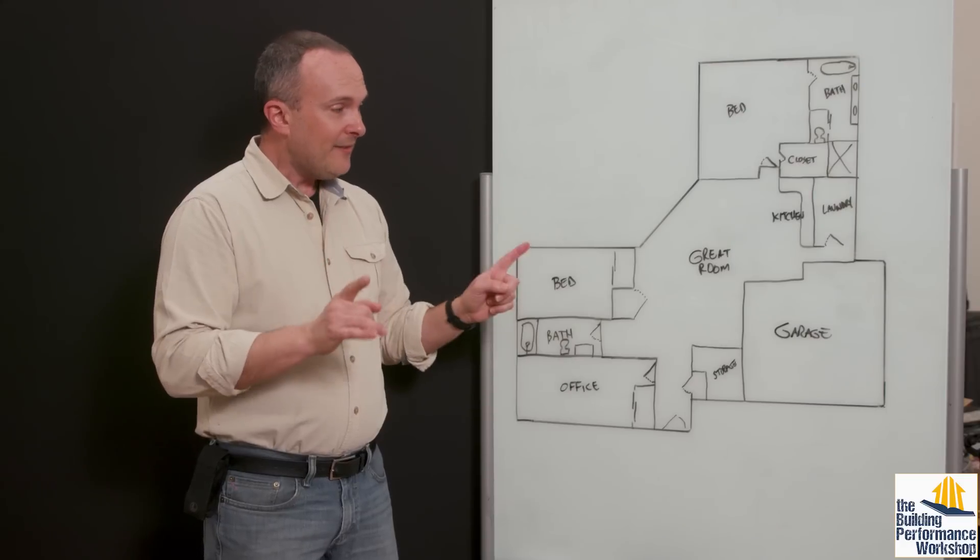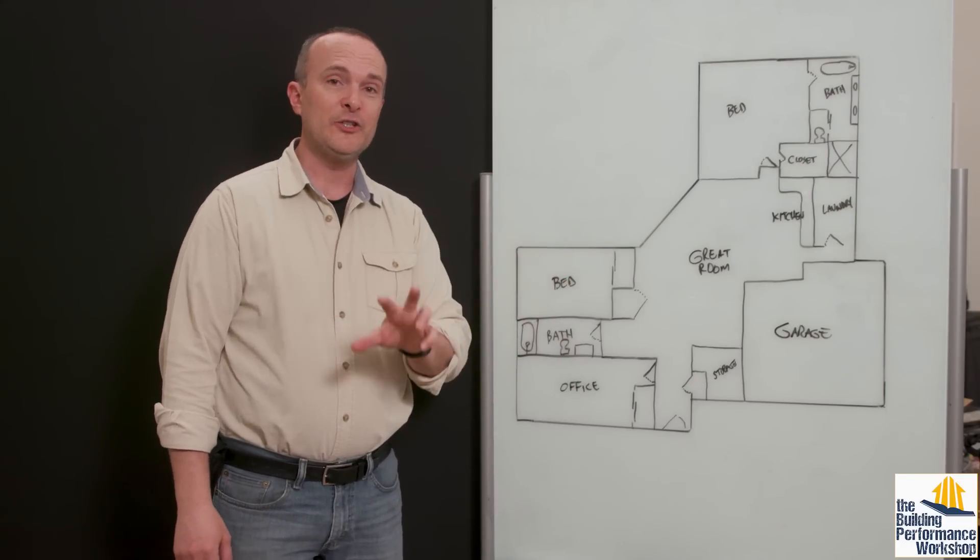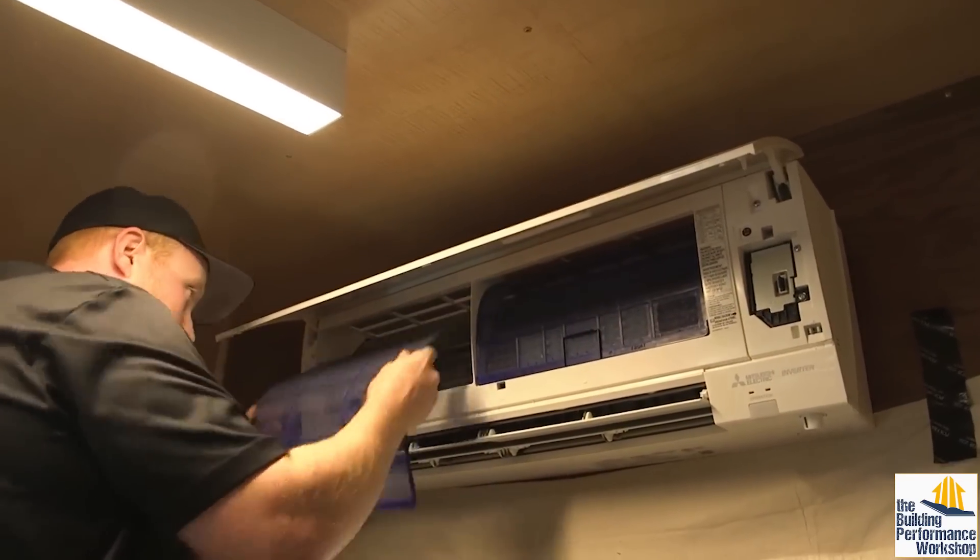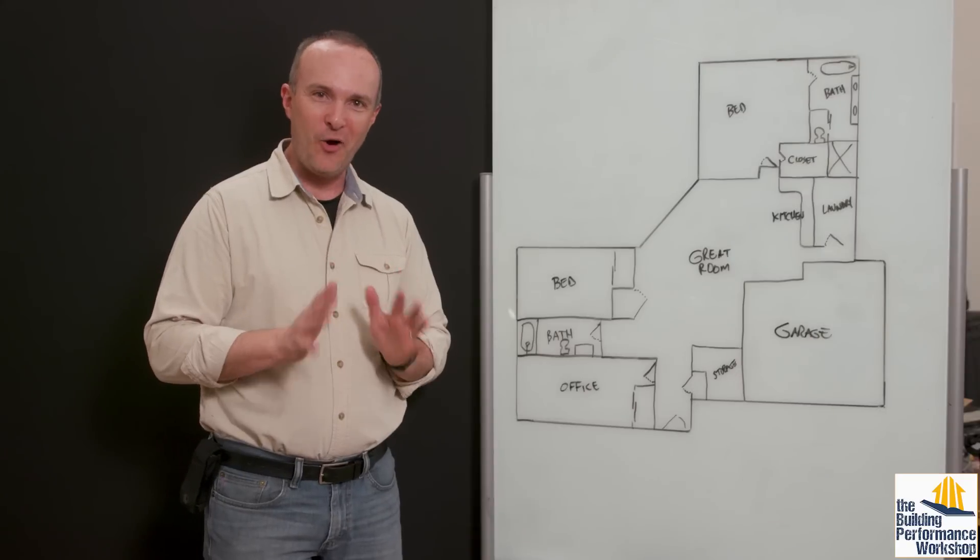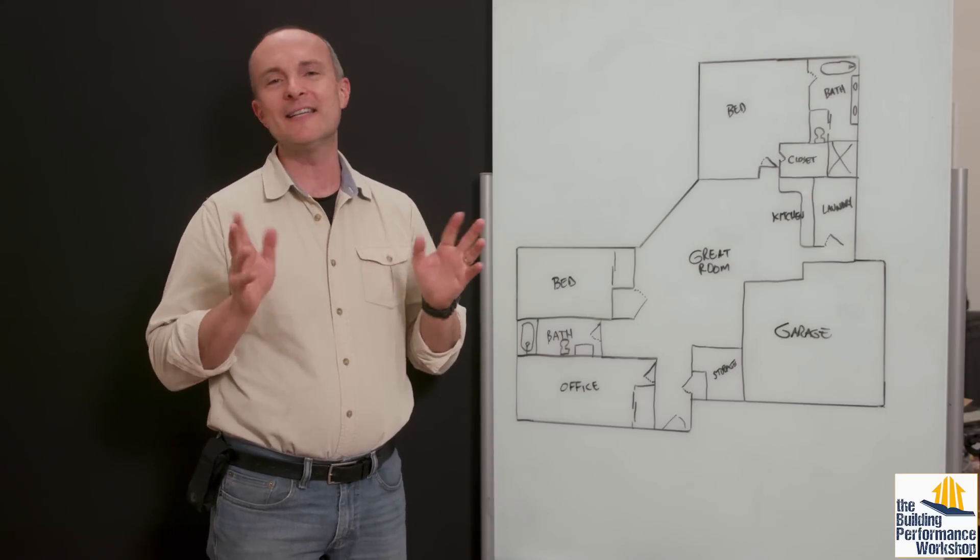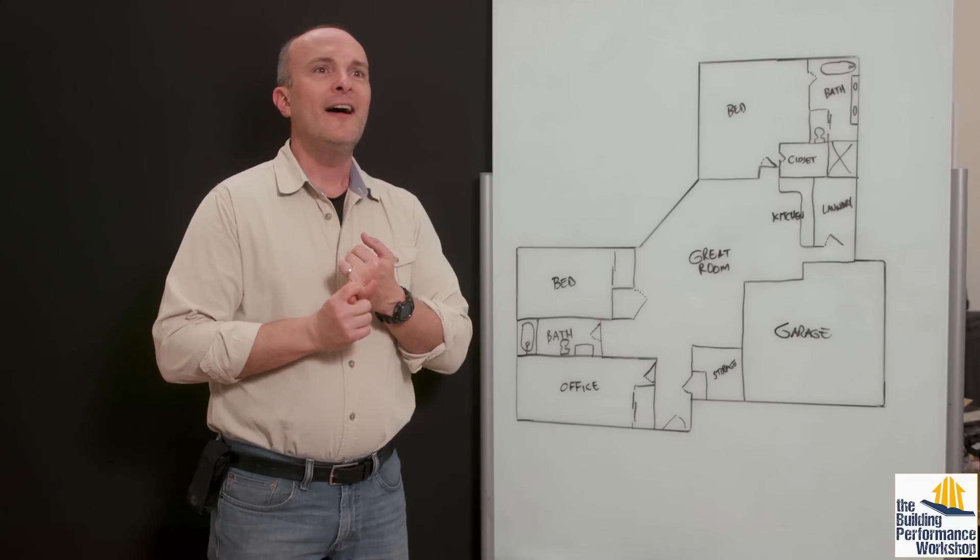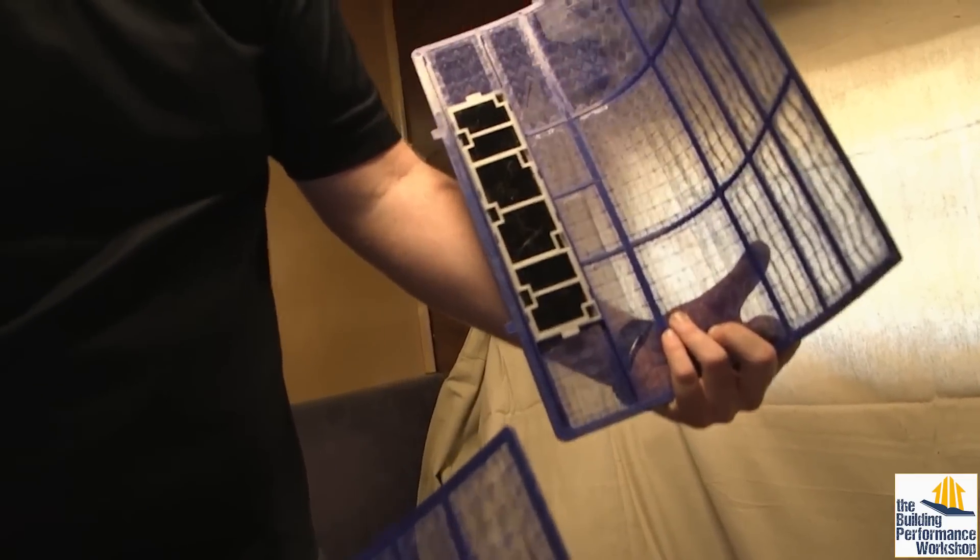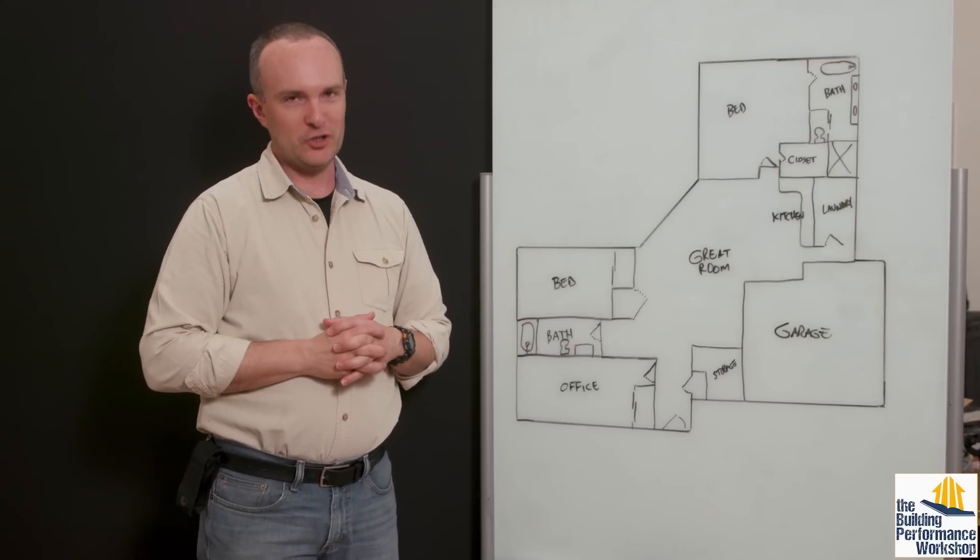But if we have no duct system, then we have no filter because the filters that are in these ductless mini splits are not good. They are there to protect the equipment only. They might have a few things like Mitsubishi has some very nice little bells and whistles that they've added like an allergen filter and a carbon filter. And they're literally about that big. I don't know how much air goes through that, but it's not a whole lot. I applaud them for trying.